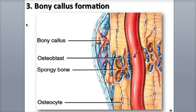Following the formation of the soft callus, another reparative phase occurs. This phase involves osteoblasts from nearby healthy bone tissue that start making spongy bone trabeculae in the area of the soft callus. The trabeculae connect the healthy and damaged ends and fragments of bone tissue.